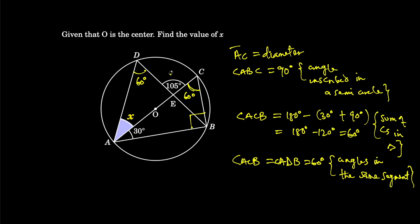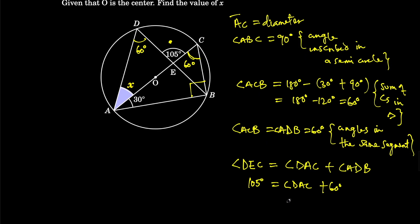So which means that 105 degrees is equal to 60 degrees plus x. So I can write that angle DEC equals angle DAC, which we are looking for, plus angle ADB. So 105 degrees equals x plus 60 degrees.